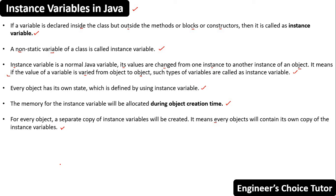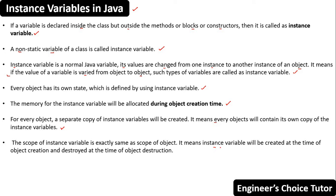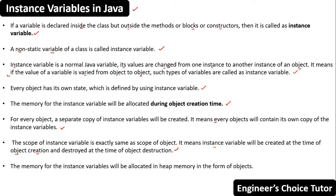Now let's discuss the scope or life of an instance variable. The scope of an instance variable is exactly the same as the scope of the object — it will be created at the time of object creation and destroyed at the time of object destruction. The memory for the instance variable will be allocated in the heap memory as a part of objects.